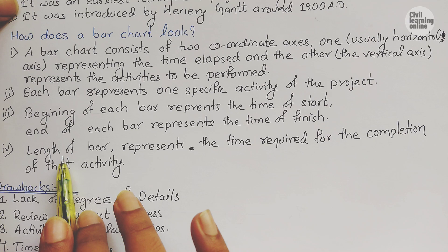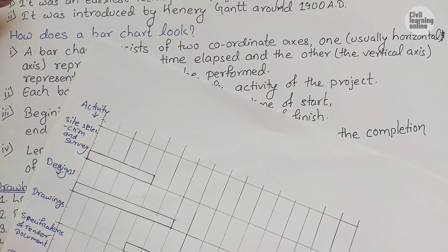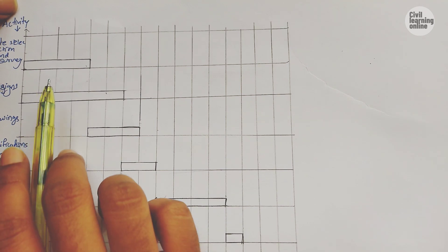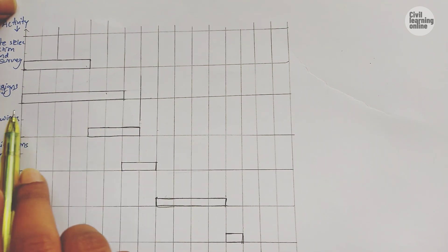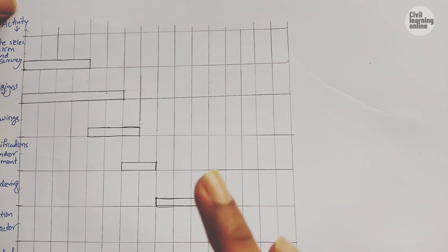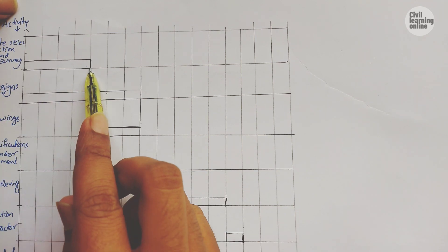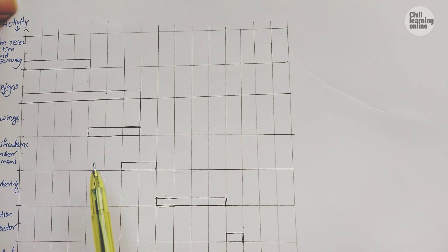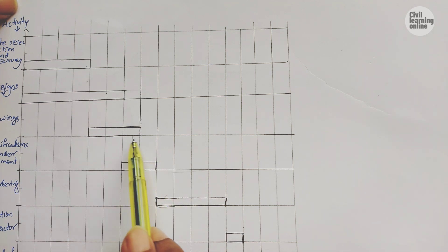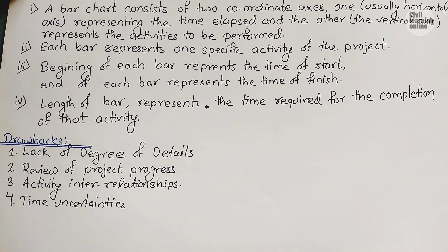The fourth point is that the length of the bar represents the time required for completion of that activity. Different activities have different bar lengths, each representing the time period needed. For example, 0 to 4 means it requires 4 weeks. Similarly, 4 to 7 requires 3 weeks.